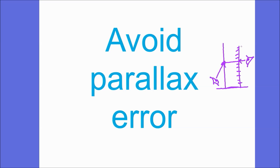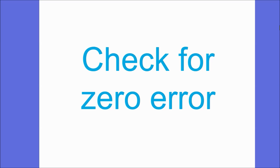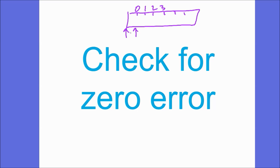Even if you can't fully explain what parallax error means, it's often worth putting it down when talking about accuracy. The other simple phrase that often comes into play is 'check for zero error.' Zero error could be something as simple as your ruler not starting at zero at the end of the ruler.